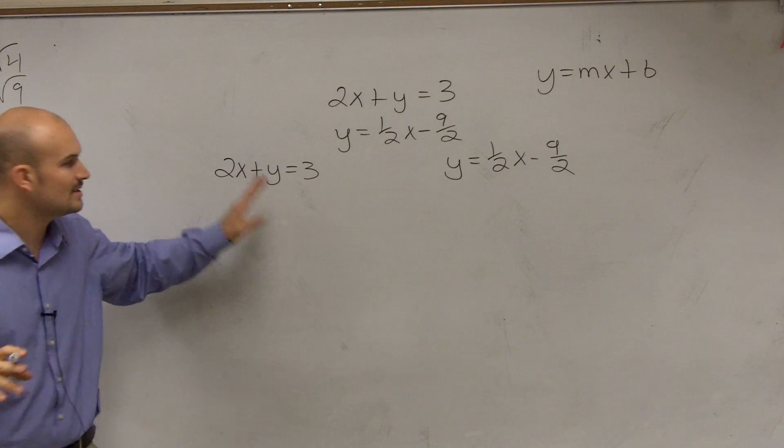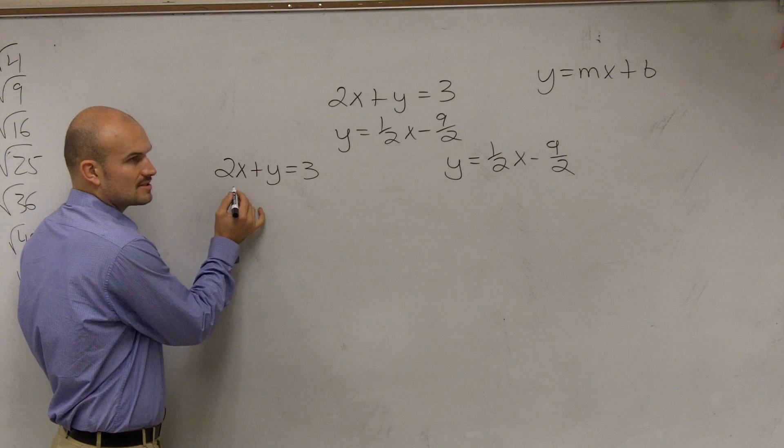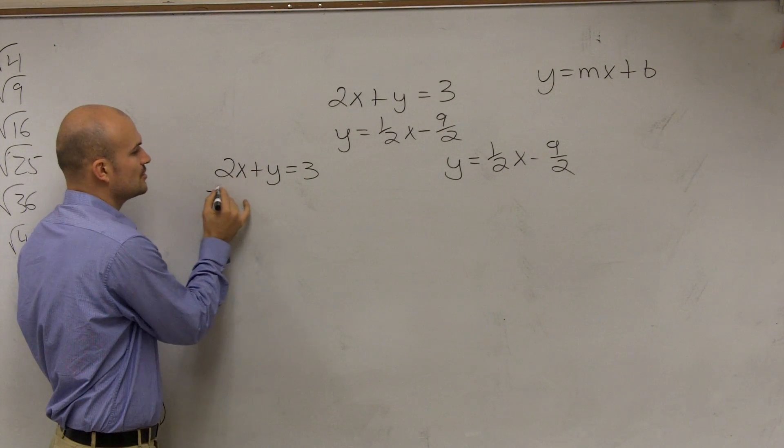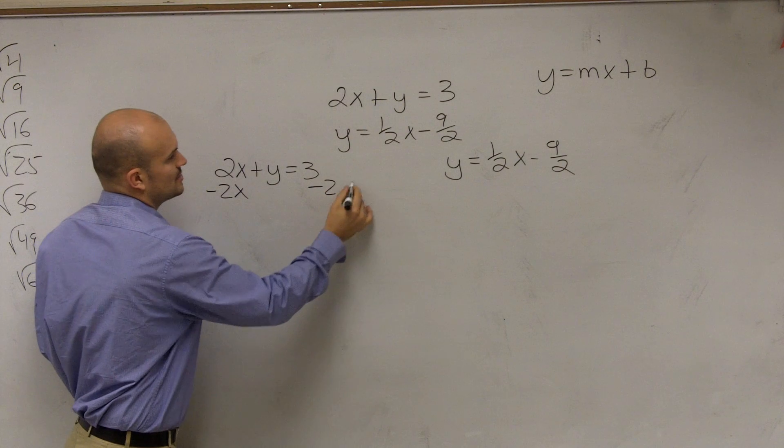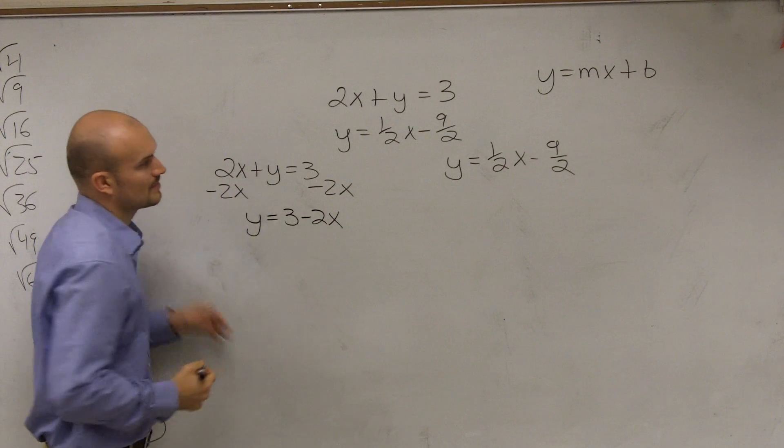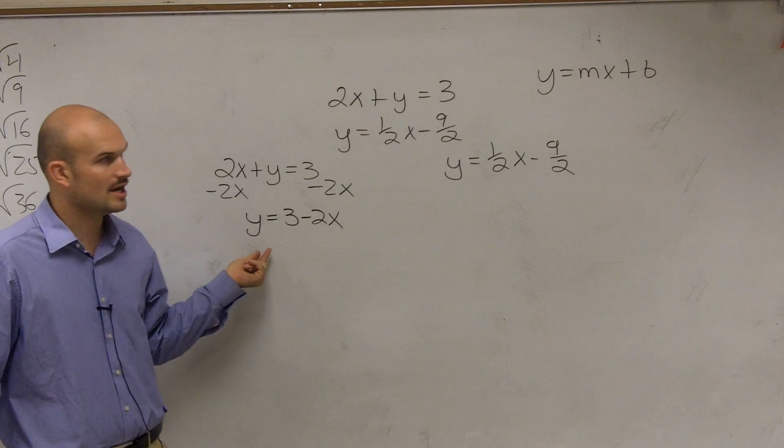This, however, we have to solve for y. So we've got to get the y by itself. We need to get rid of this 2x. This 2x is being added to the y because it's positive. So to get rid of it, I'm going to subtract the 2x on both sides.